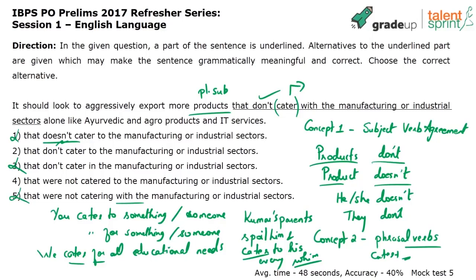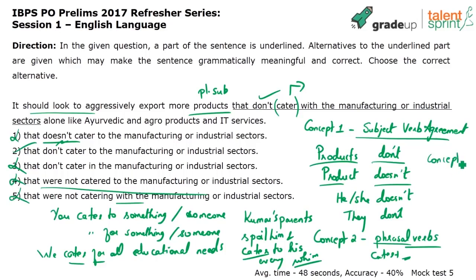So I have to choose between options two and four. We've applied concept one — subject-verb agreement — and concept two — phrasal verbs, cater to or cater for. It should look to aggressively export more products, which means we're talking about something in the future. Products that don't cater to the manufacturing or industrial sectors alone like Ayurvedic and agro products and IT services. The third concept applied here is tenses. Option four is talking about a past context — 'not catered to' — which is incorrect. So the answer is option two.